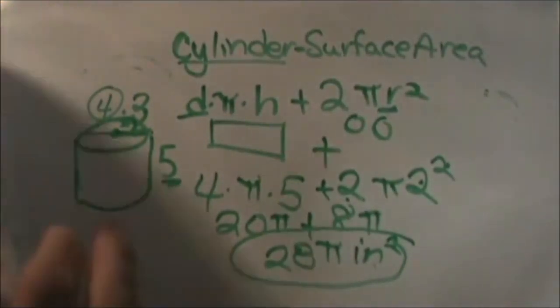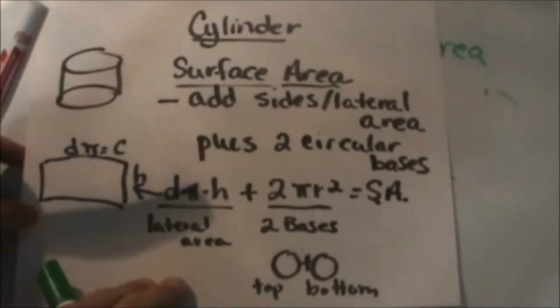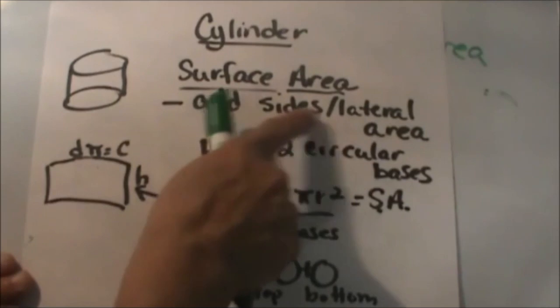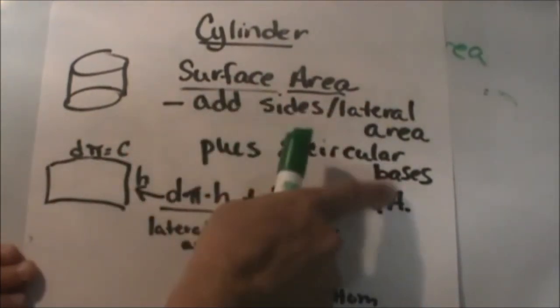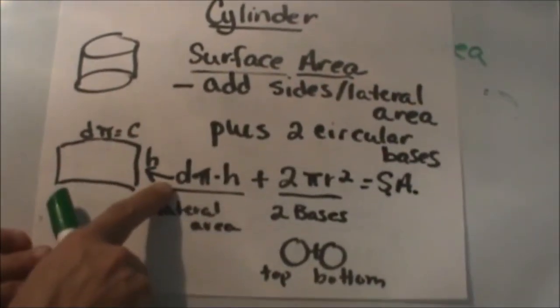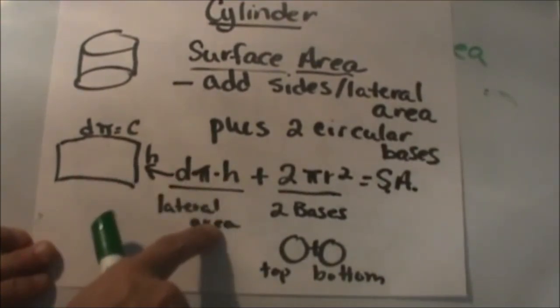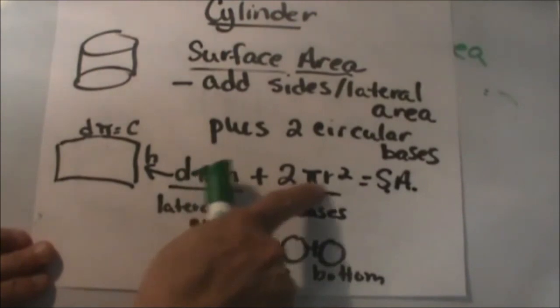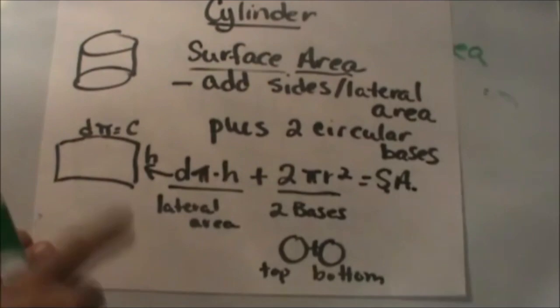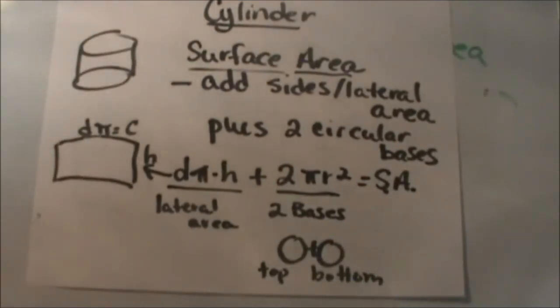So there you go, that's how you find the surface area. So we are going to add the sides, or the lateral area, plus 2 circular bases. The formula is d times pi times h for the lateral area. The 2 bases would be pi r squared times 2, or 2 pi r squared, and that gives the total surface area. I hope this video was helpful.